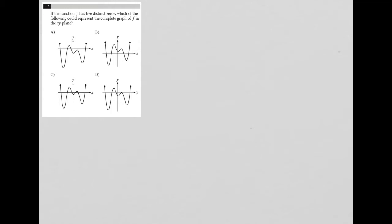So the key to this question is understanding what five distinct zeros, especially the zeros part, really means. So whenever we're graphing, or even if you're not graphing, let's say you have a polynomial, if this test says find the zeros...